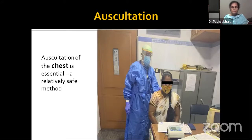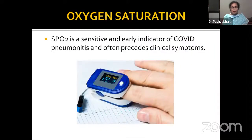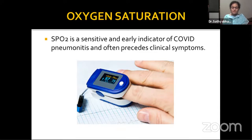Auscultation of the chest is essential. A digital stethoscope scores over a regular one, but in our center we use the method of standing behind the patient to auscultate, which is quite safe. Oxygen saturation is a sensitive and early indicator of COVID pneumonitis, often preceding clinical symptoms. In an otherwise asymptomatic patient with unexplained hypoxia, a CT chest is mandatory.